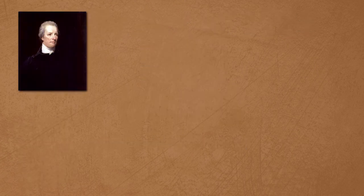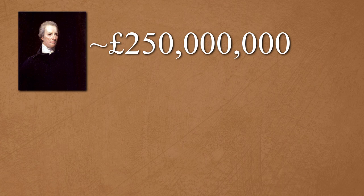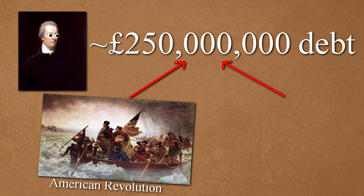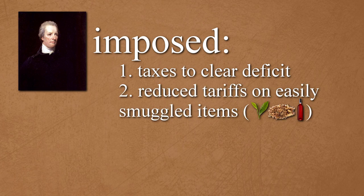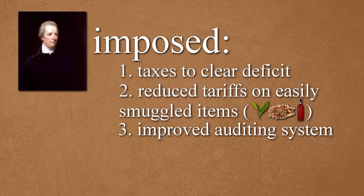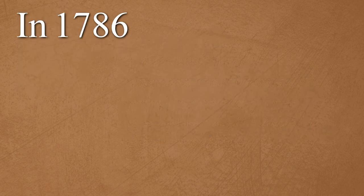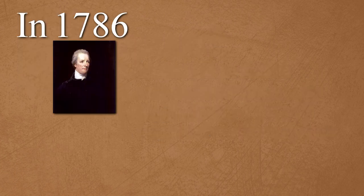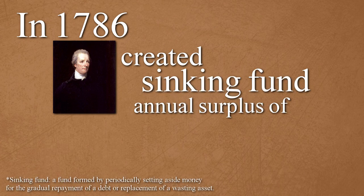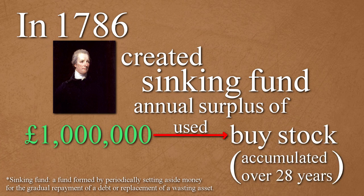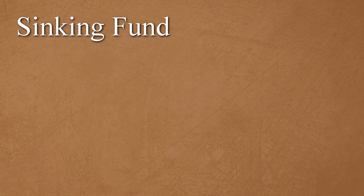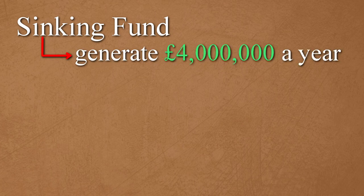Pitt also had to deal with the country's £250 million debt, most of which was accumulated from the American Revolution and the Seven Years War. Pitt imposed new taxes to clear the deficit, reduced tariffs on easily smuggled items, and reduced revenue fraud by creating an improved auditing system. In 1786, Pitt also created a sinking fund, in which an annual surplus of £1 million was used to buy stock and accumulated over 28 years, eventually beginning to generate £4 million a year.